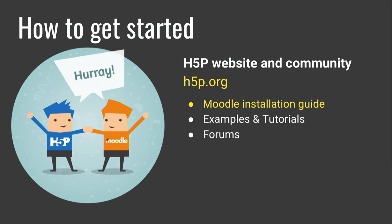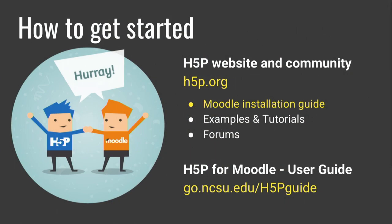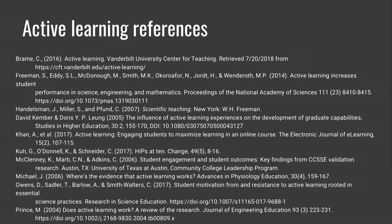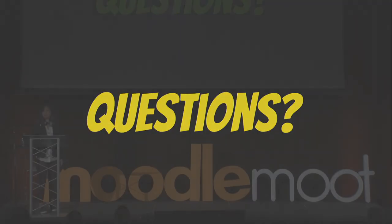H5P.org is a huge and growing community of users, and the website has a lot of information about getting started. It also gives you a test space to try out some of these activity types. At NC State, we were in the position of having to create documentation for how H5P works in Moodle, as none existed previously. You can go to that link to see what our documentation currently looks like, and we hope to be adding to it and fleshing it out as we get more usage and tips. If you want to learn about active learning, we have references at the end, and we will happily take any questions.